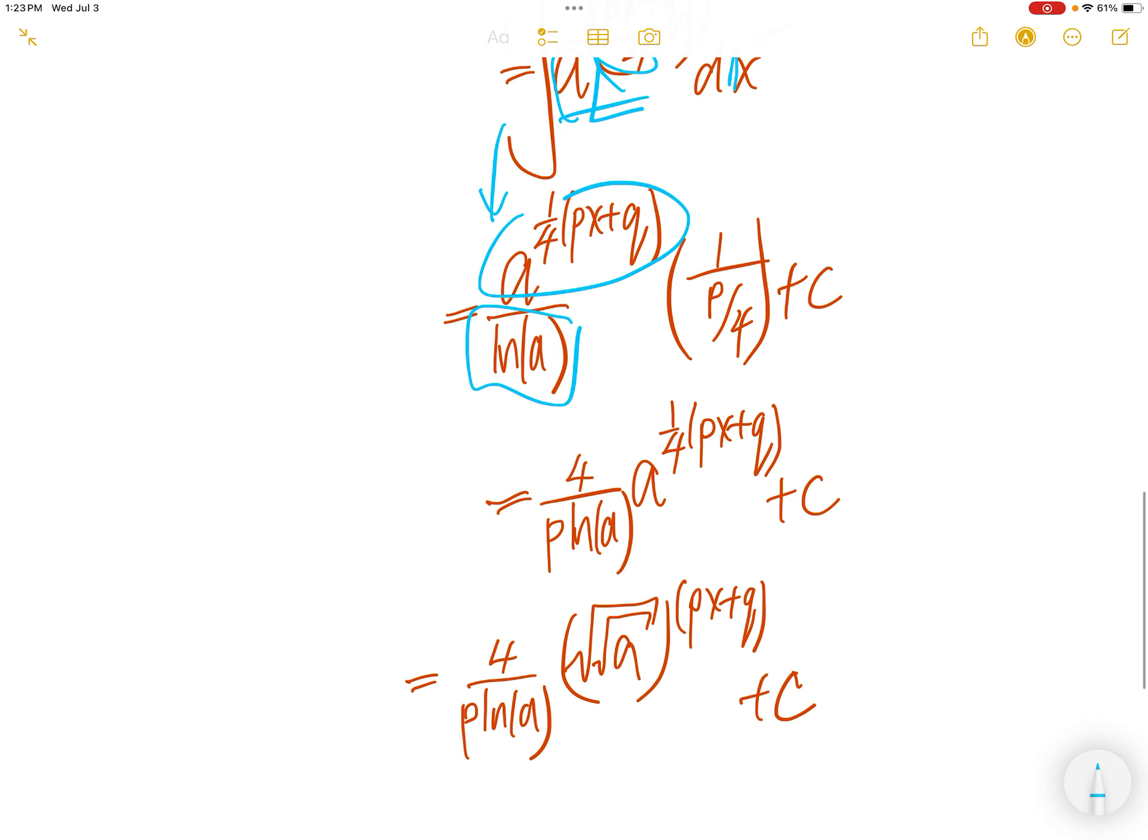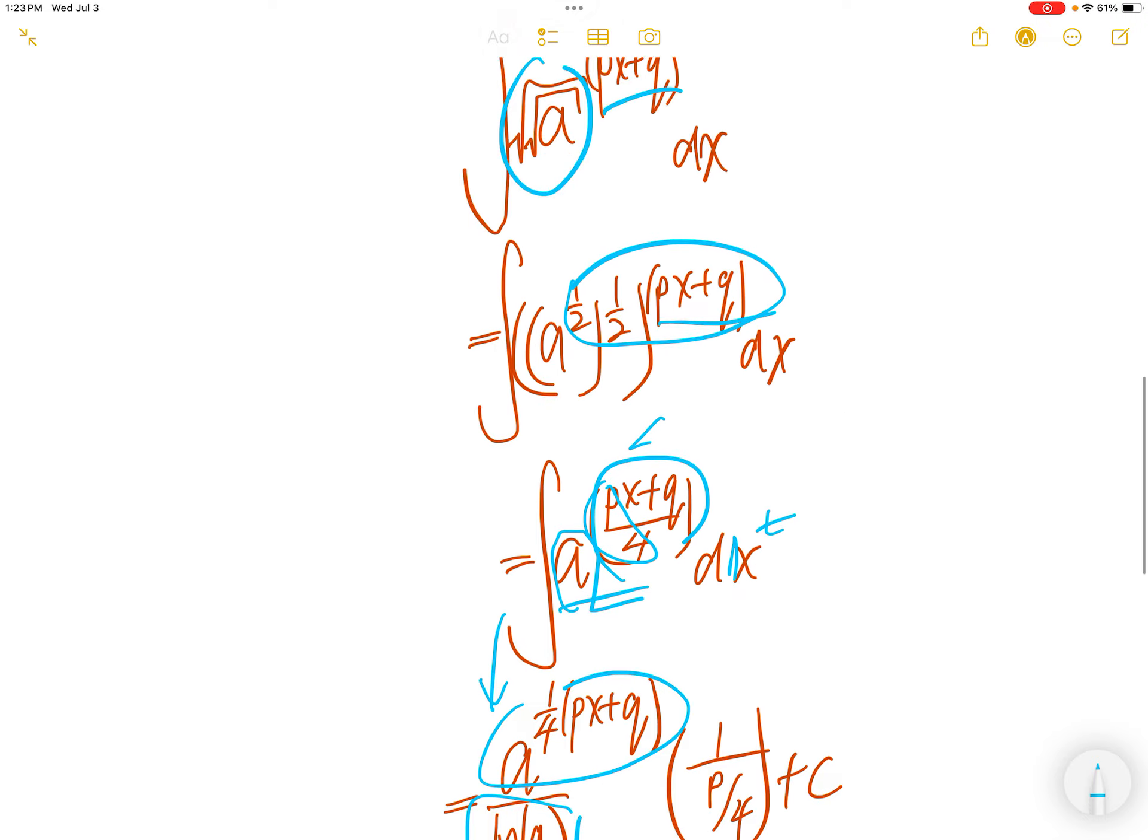Now 4 comes up, and then we get p multiplied by ln(a), and then you have this piece. Now rewrite this piece as √(√a). Done.